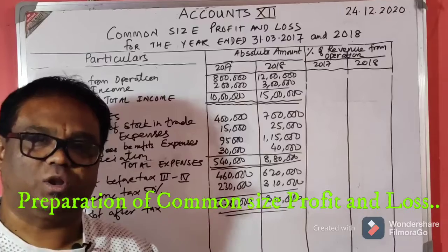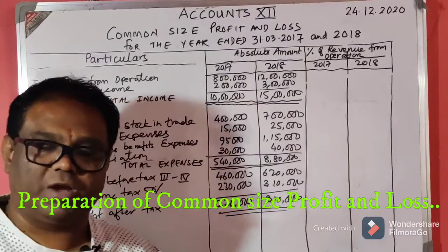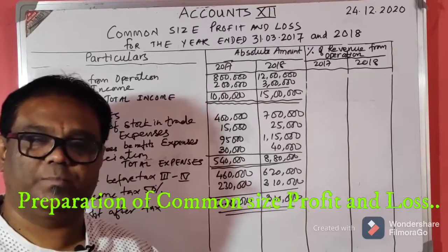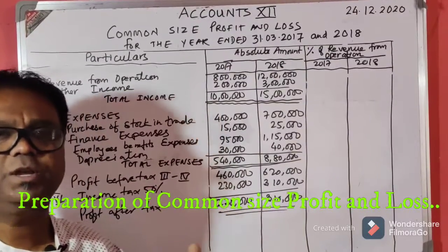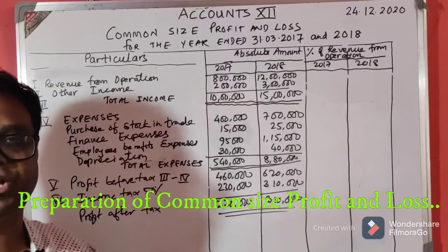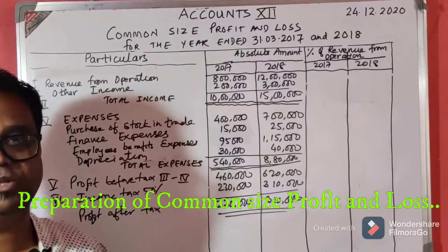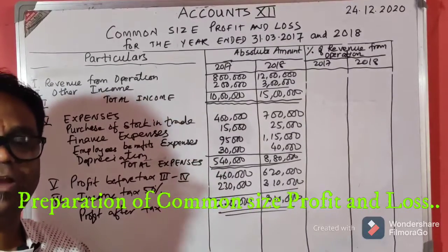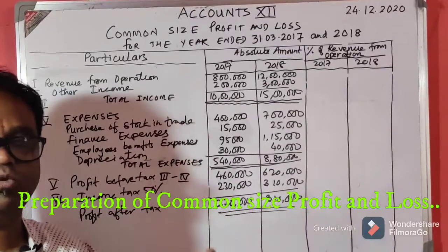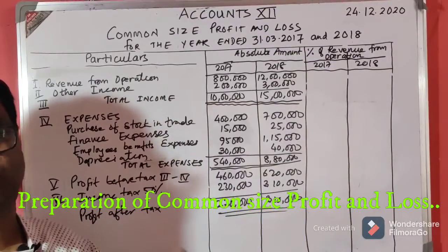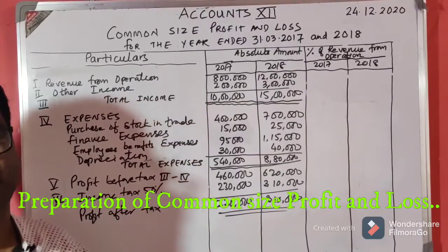The expenses include depreciation, amortization, traveling expenses, salaries and wages paid to employees, purchase of goods (direct expenses), financial expenses like interest paid and commission paid. After finding total expenses, total income minus total expenses gives profit before tax, and after subtracting tax you arrive at profit after tax.